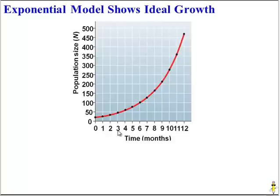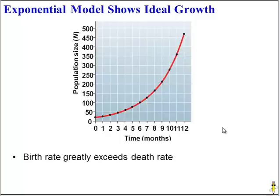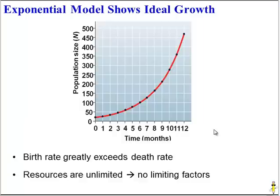Now let's look at how we can model population growth. The first model is the exponential model, which shows growth in ideal circumstances, but it rarely happens in the real world. With exponential growth, there is a continual increase in population size. This can only happen if the birth rate greatly exceeds the death rate, which requires unlimited resources and no limiting factors — plenty of food and water, not a lot of predators, no disease. Everything is wonderful.